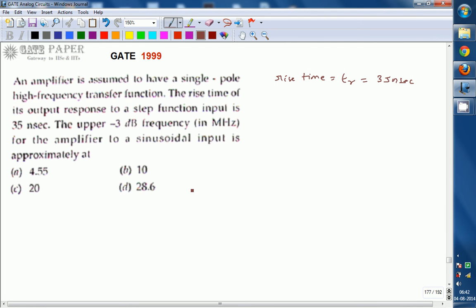We know the relation between rise time and bandwidth as rise time equals 0.35 divided by bandwidth. This is the equation between rise time and bandwidth.